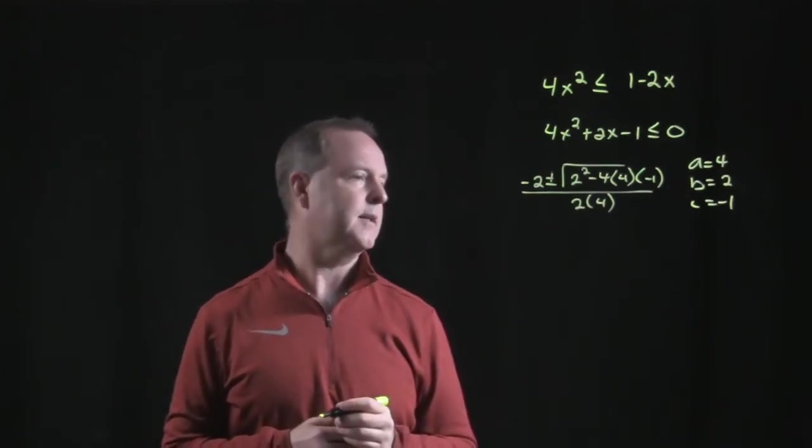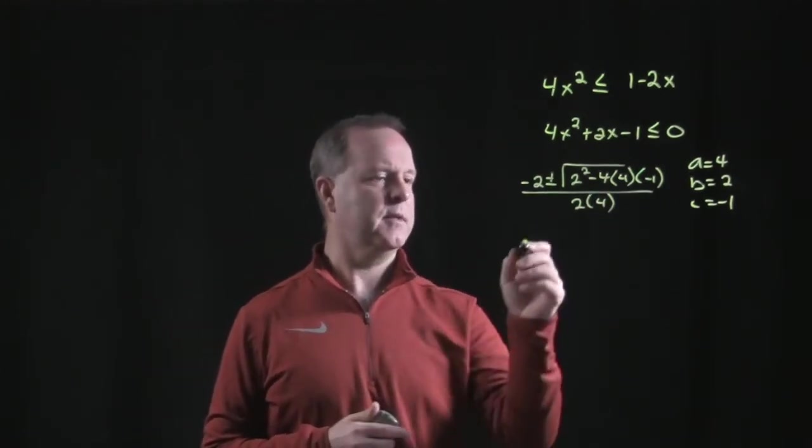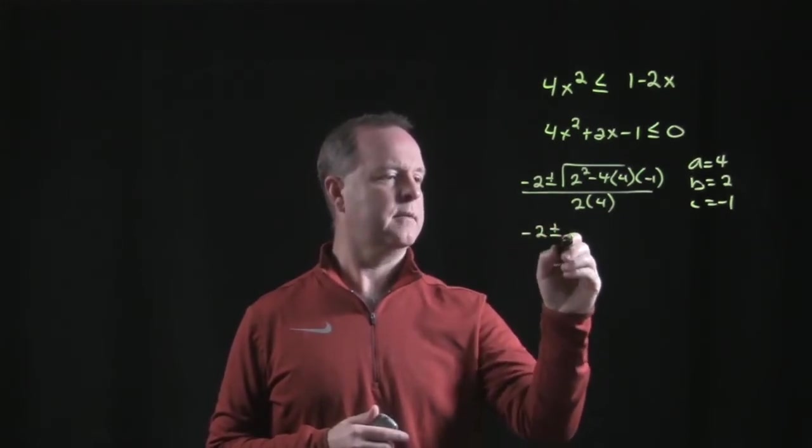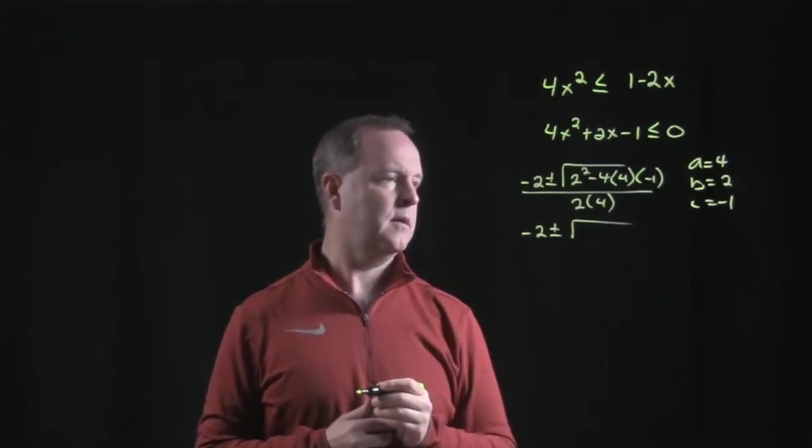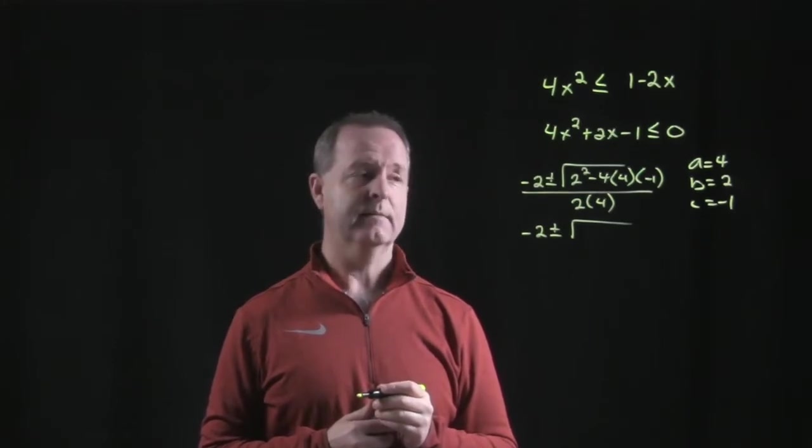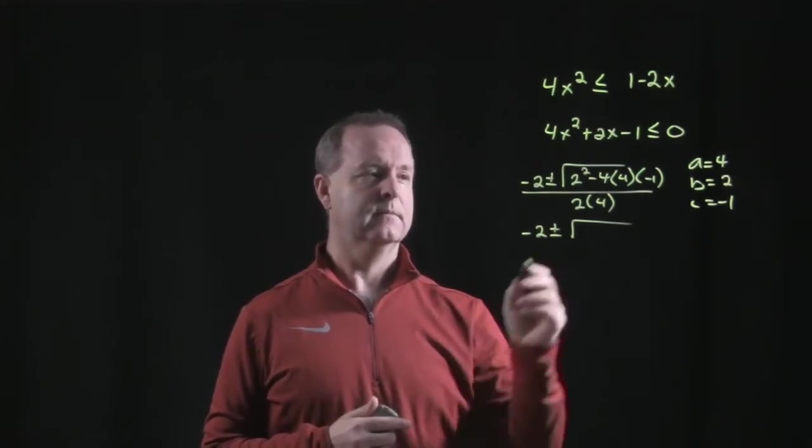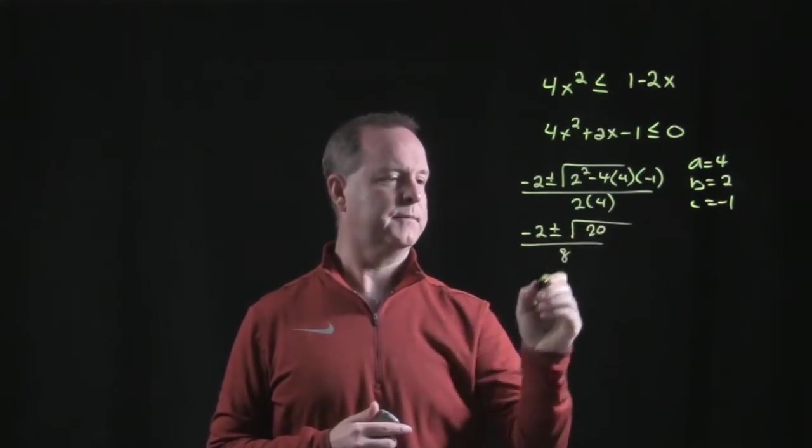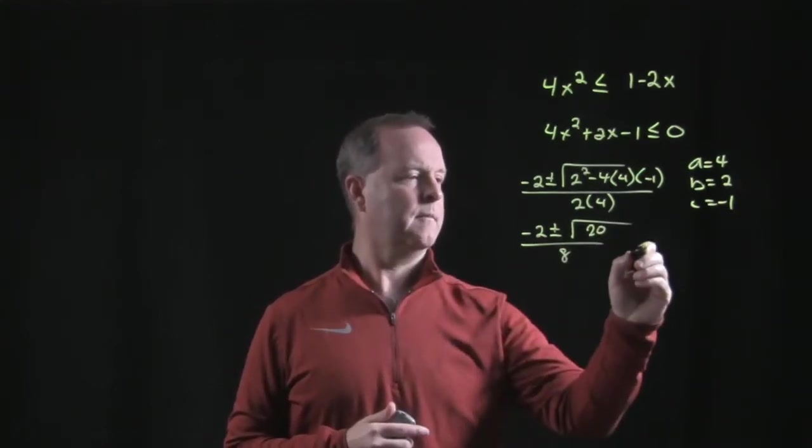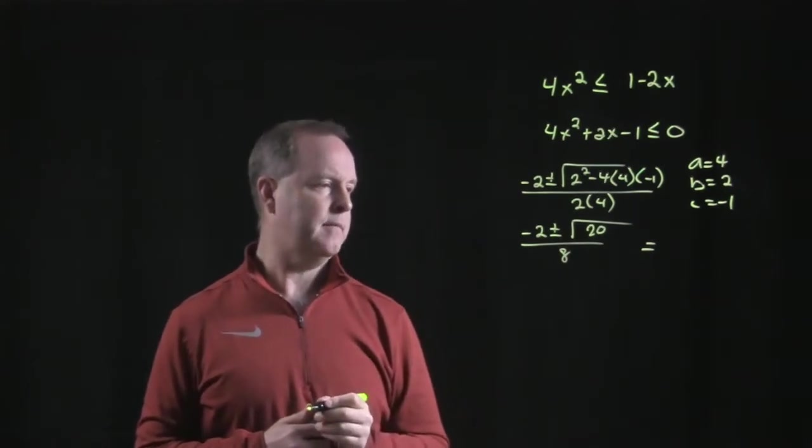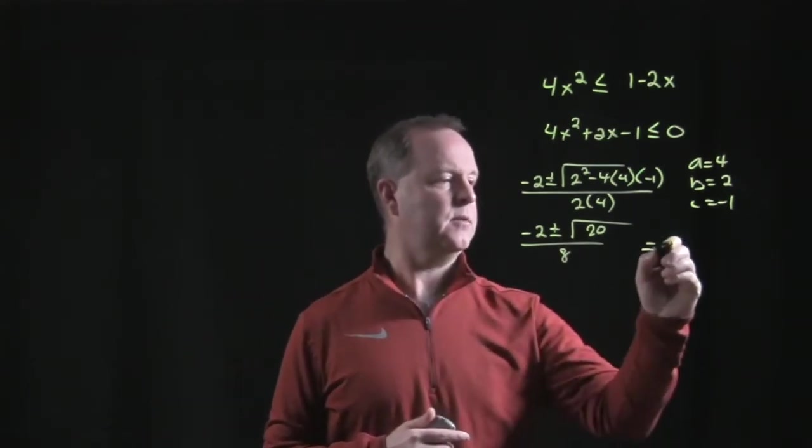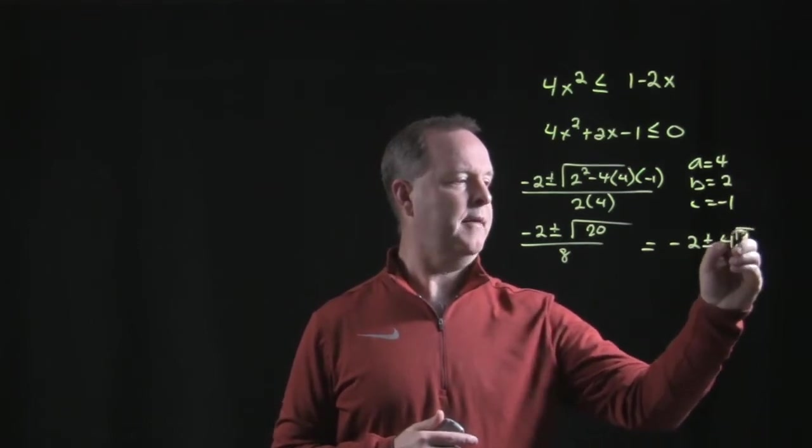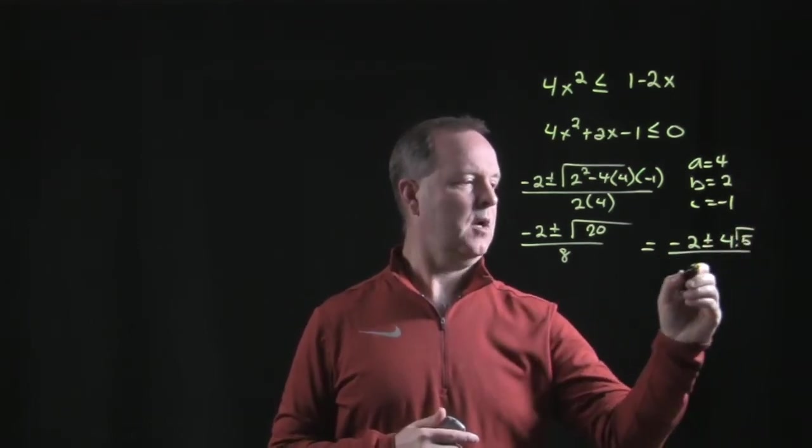If I put those in correctly, let's go ahead and simply reduce. So minus 2 plus or minus square root of 4 plus 16 all over 8. That's 20, okay, so that does reduce to minus 2 plus or minus root 20 all over 8.